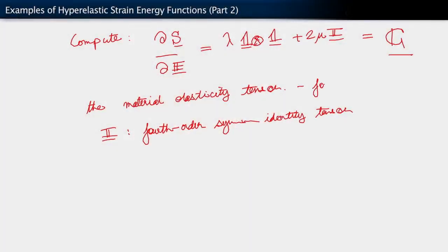I ought to mention that clearly, well, it may not be completely clear yet, but it will become clear in just a little bit. The material elasticity tensor is also a fourth order tensor. And so is i.